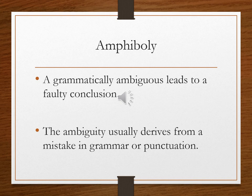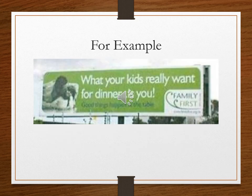The fallacy of amphiboly is also about ambiguity, but what's different is that it's not a particular word used in two different senses. Rather, we have an entire sentence or statement that can be interpreted in two completely different ways. We draw the wrong conclusion because we don't know exactly what the statement means. Here's an example on a billboard promoting family: 'What your kids really want for dinner is you.' Presumably they intended to say kids want to be with you for dinner — but it could also mean they want to eat you for dinner. The entire statement can be taken in more than one way.